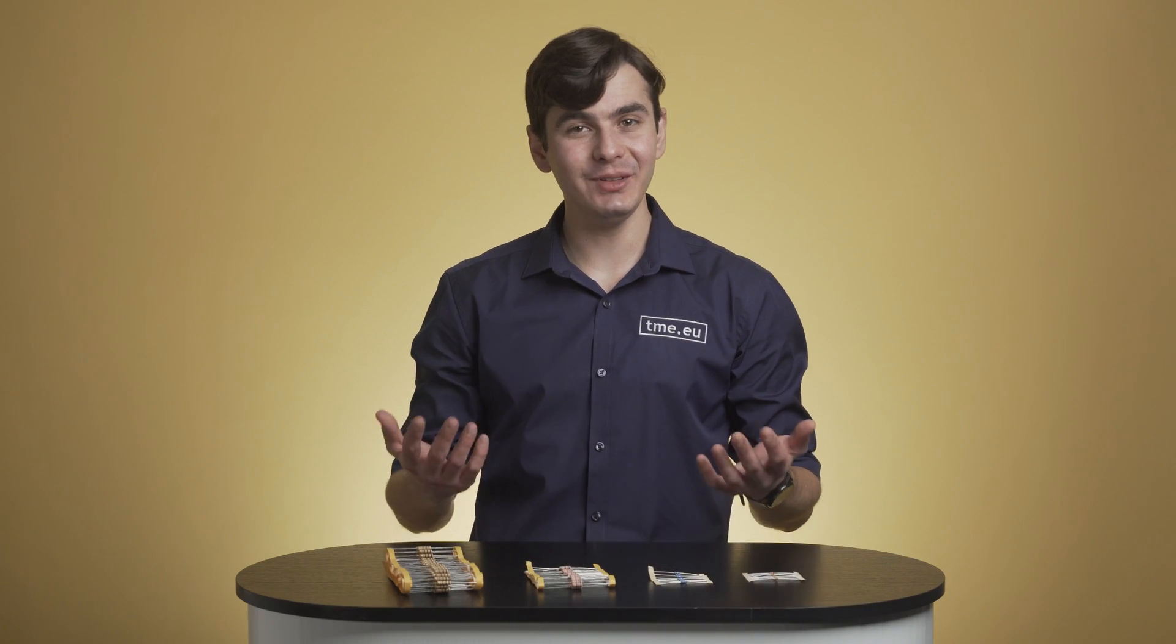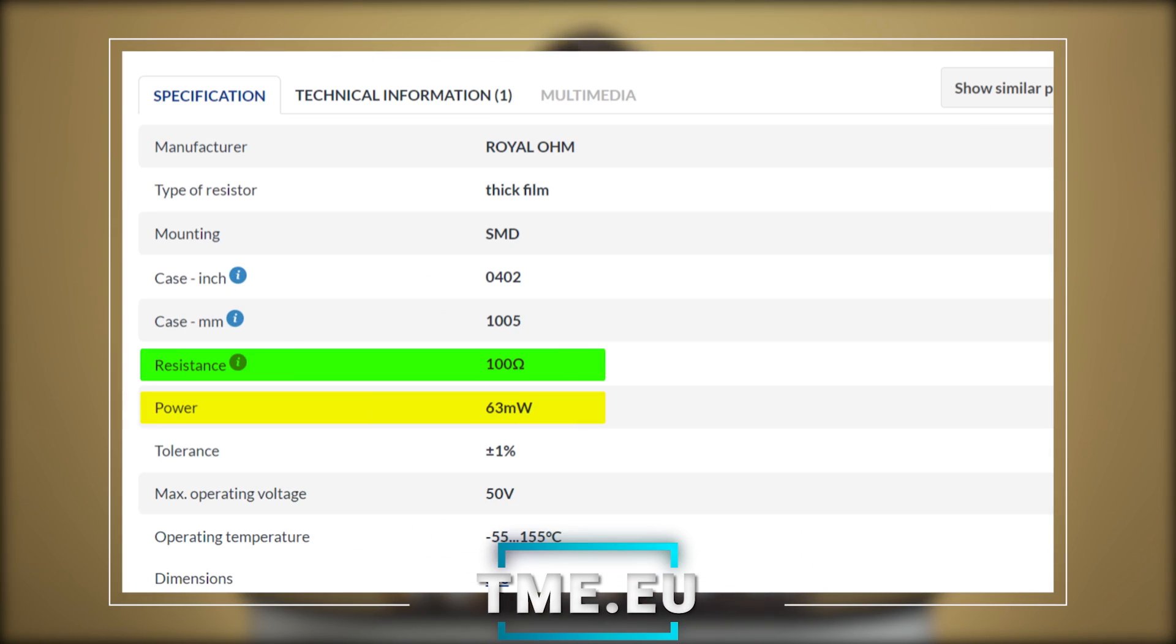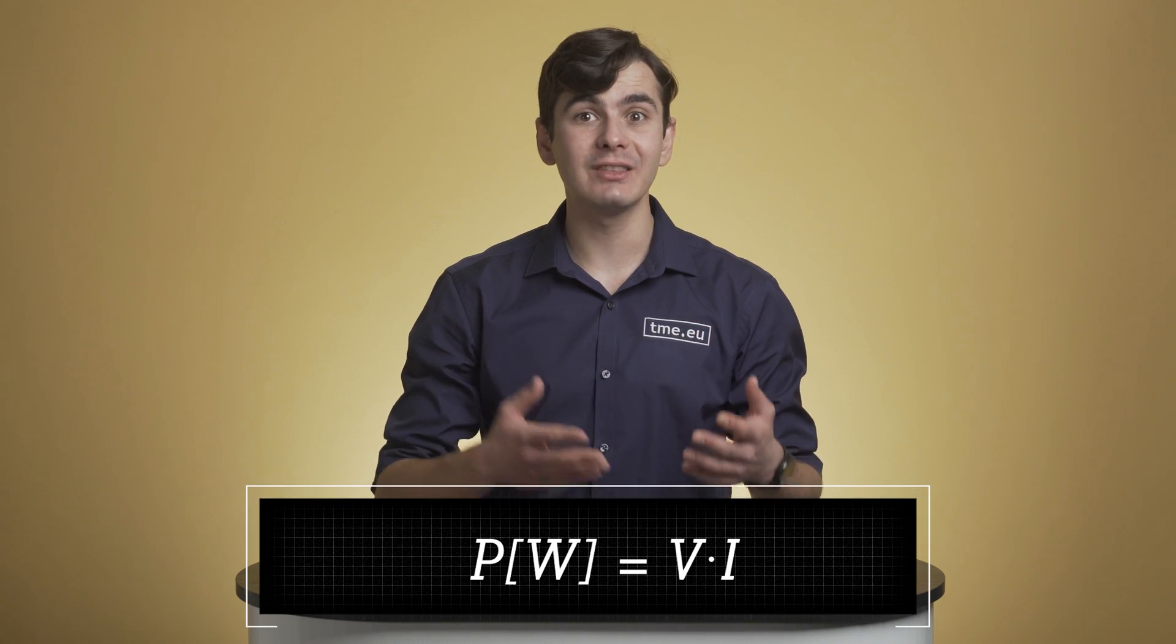Another important value that you can see on the datasheet of the resistor except their value is the power rating. This defines the maximum energy the resistor can safely dissipate. To find the power rating, we simply use Joule's first law, which is power equals current times voltage.